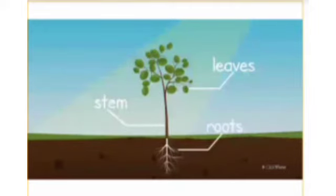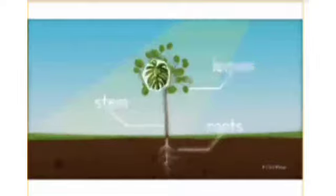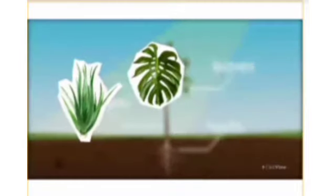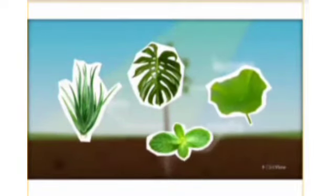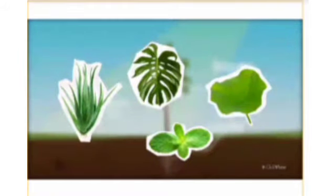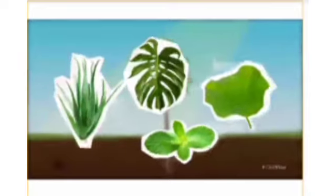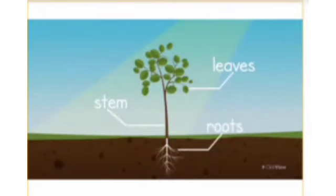Leaves grow on the stem. There are many different leaves all around us — some are long and spiky, some are small and round. Did you know that leaves can help us identify the plant we are looking at?